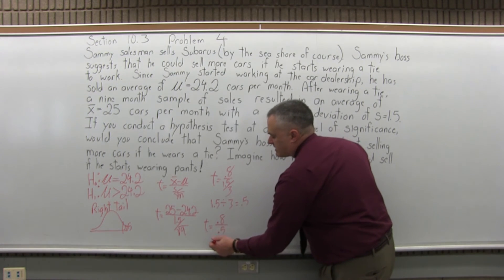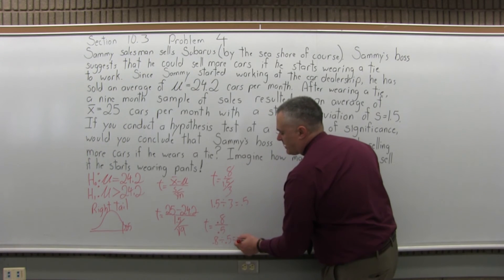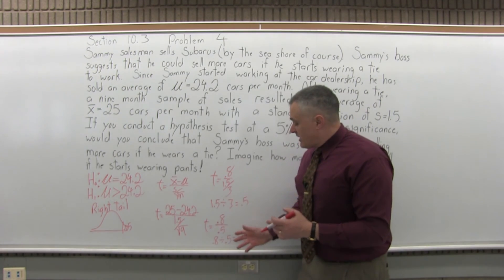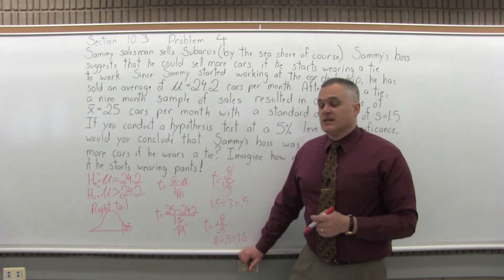Which, again, I know it's 1.6, but if you don't know or you think you know but you're not really positive, just use your calculator. It'll take a few seconds. 0.8 divided by 0.5 is 1.6. Now, that's step 4. We computed T. We got a value of T equal to positive 1.6.